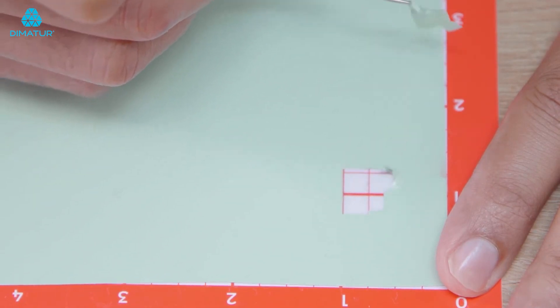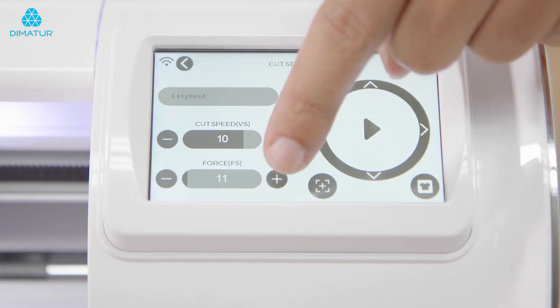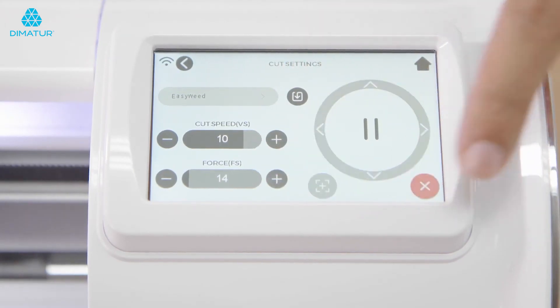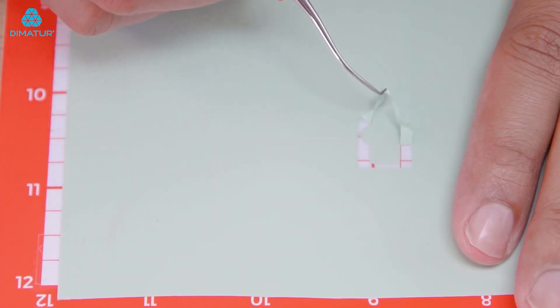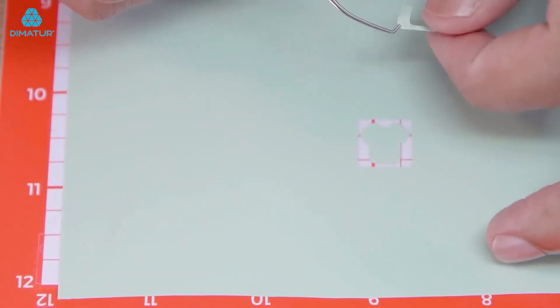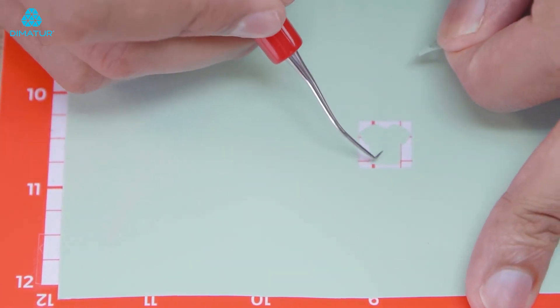Simply adjust your force to accommodate your material and press test cut again. Once you achieve the test cut that you're comfortable with, hit the update button as previously shown.